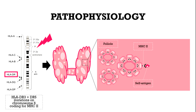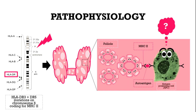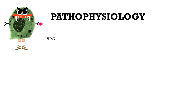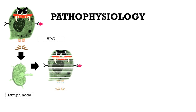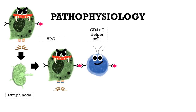But in the case of Hashimoto thyroiditis, self-antigens are mimicking foreign proteins, called molecular mimicry, so self-antigens are turned into auto-antigens, which confuses antigen-presenting cells. Antigen-presenting cells pick up the auto-antigen, carry it to the nearby lymph node, and present it to the CD4-positive T-helper cells.